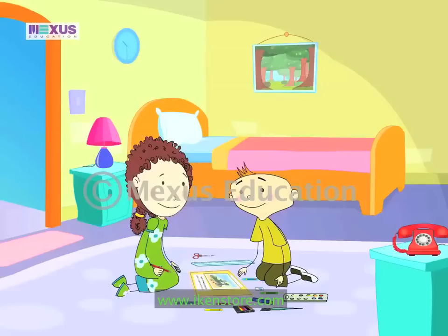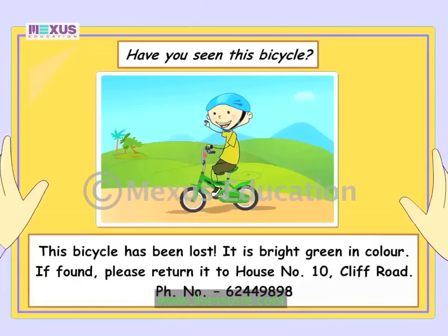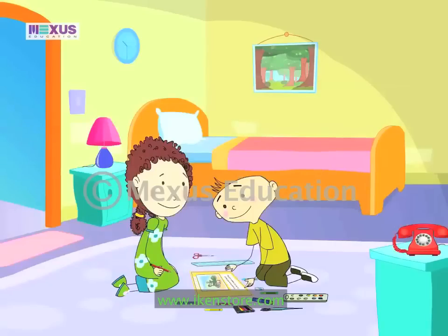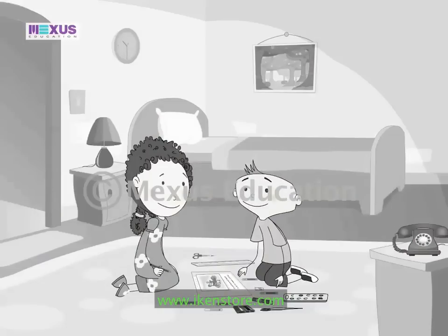Here, take a look at it Fleck. Your sentences are much more meaningful now. Have you seen this bicycle? This bicycle has been lost. It is bright green in colour. If found, please return it to house number 10, Cliff Road. You're right! It sounds so much better now. Thank you!